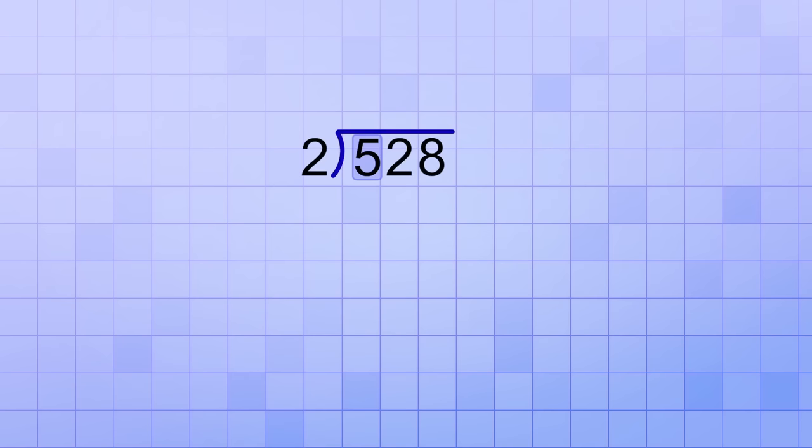To solve this first problem, we start by asking, how many 2's does it take to make 5 or almost 5? Or you can think of it as, how many 2's will fit into 5? And it's easy to see that the answer is 2. So we put a 2 as the first digit of our answer. Then we multiply 2 times 2, which is 4, and we subtract that 4 from the 5, which leaves us a remainder of 1.